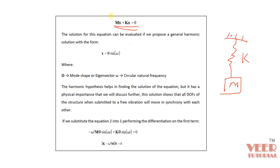The software uses the governing equation: m x-double-dot plus k x equals zero. To solve this equation, we assume a harmonic solution: x equals phi times sin(omega t), where phi is the mode shape or eigenvector, and omega is the natural frequency. After substituting these values into the equation, we get a new form.